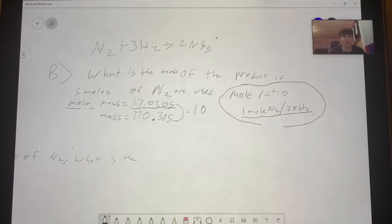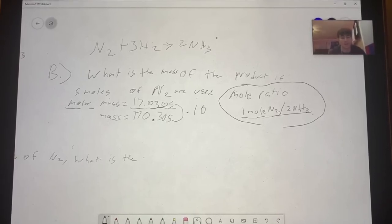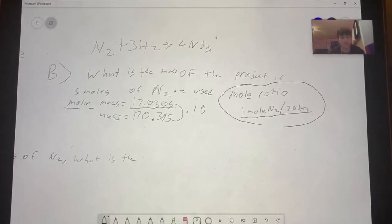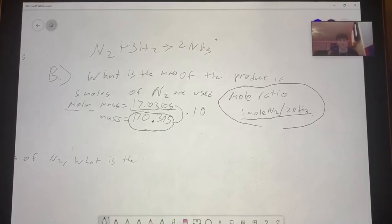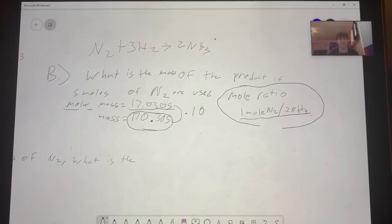We multiply by 10 and end up getting 170.305 if we want to have 10 moles of NH3 or five moles of N2.